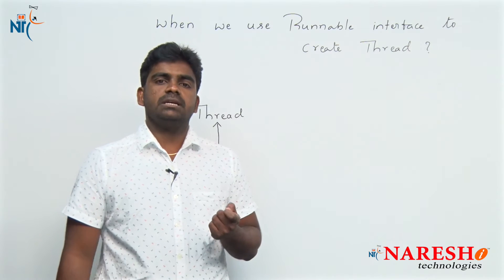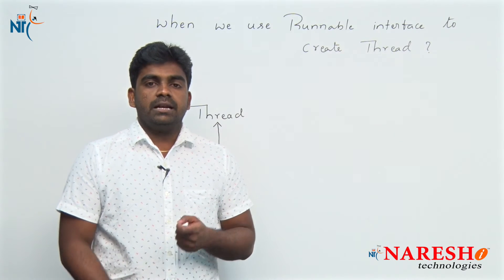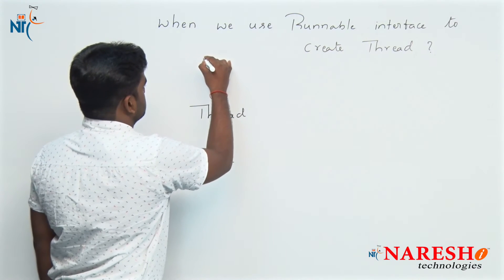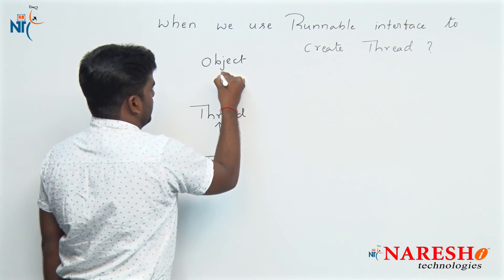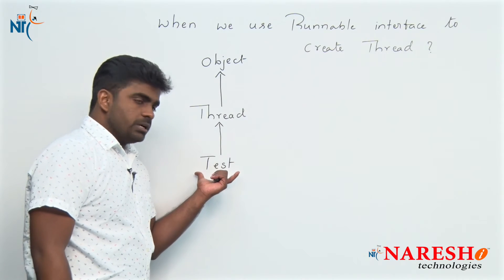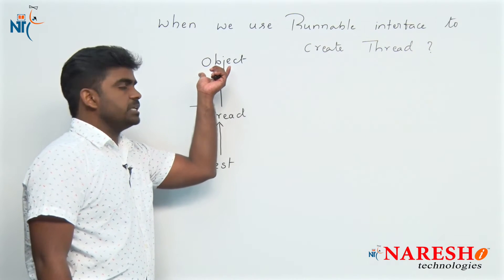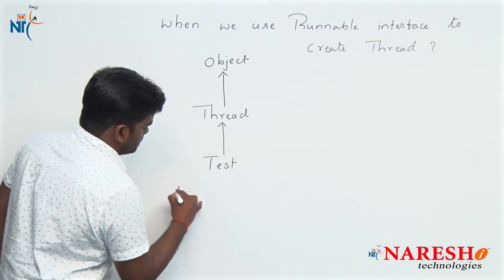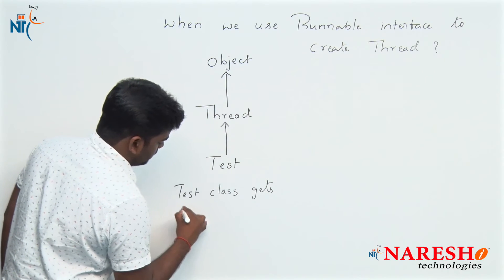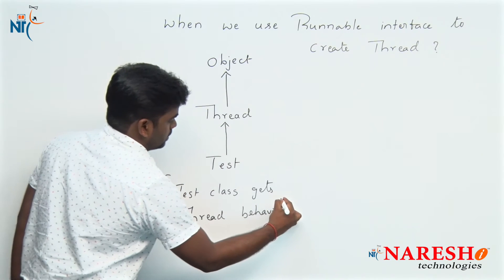Every class implicitly inherits the Object class — to get object behavior. In object orientation, every class should get object behavior by extending the Object class. So this is our user-defined class, we can call it an object also. The TestClass will get thread behavior and also object behavior indirectly. So TestClass gets thread behavior — this is the first case.